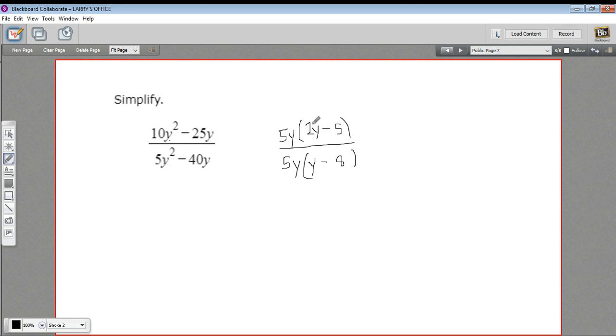And now, because this is a fraction, we can cancel things. So the 5y's cancel, and our final answer is just 2y minus 5 over y minus 8, which is a lot simpler than what we started with. So that is how to simplify a rational expression.